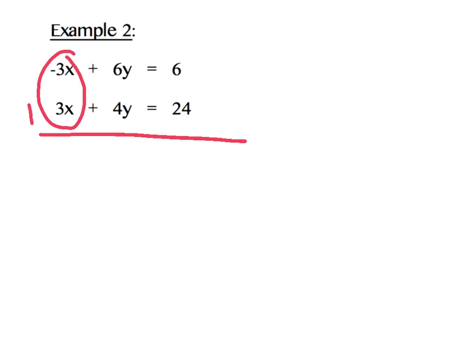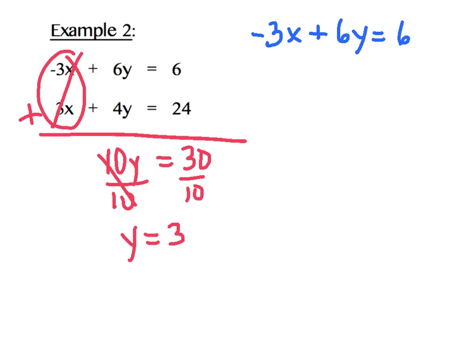I'm going to add up my columns now, and these guys will cancel each other out. 6y plus 4y equals 10y, and 6 plus 24 equals 30. I'm going to continue to solve, and I find that y equals 3. Now that I know y equals 3, I'm going to substitute that value into either one of my equations, but I chose to use the first equation.